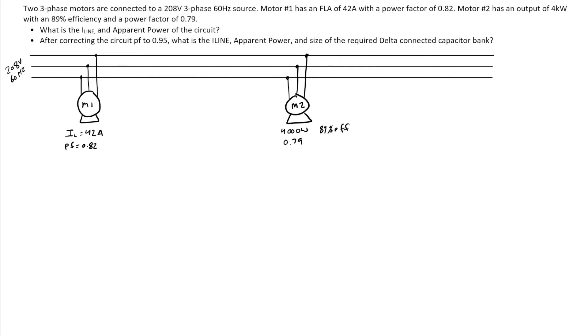So a little bit of work ahead of us here. So I'll just kind of go through each one and how I would solve it. So with motor one, I know that my line voltage is 208 volts and my line current is 42 amps.